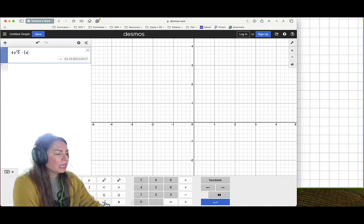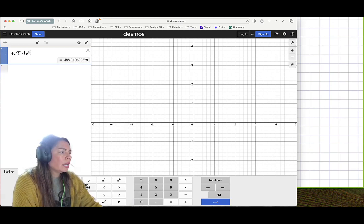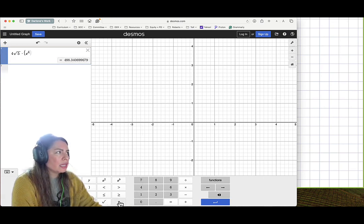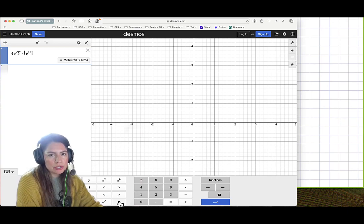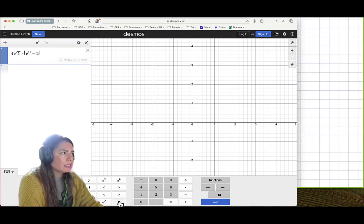parenthesis, e to the 4 pi. So 4 and then my pi symbol is right there. I have to move the cursor over so it gets on that base again. And then I'll have minus 1 and then close the parenthesis.